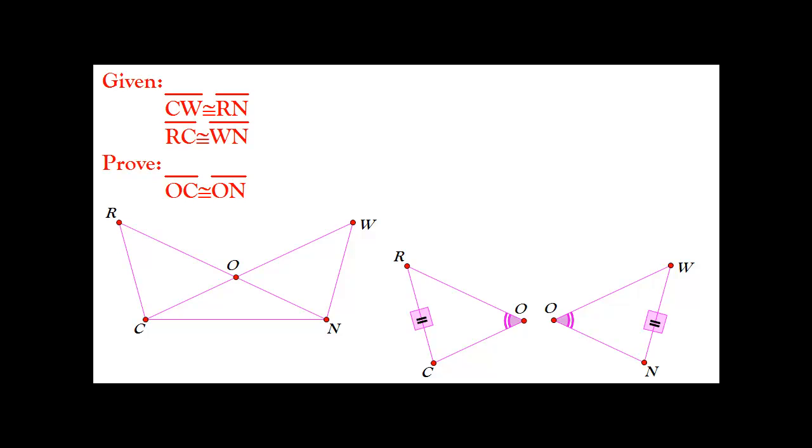Now, if these two triangles are congruent, then we would have enough information to prove OC and ON are congruent. However, here we only have that segment RC is congruent to segment WN. And then by vertical angles, angle ROC and angle WON are congruent.